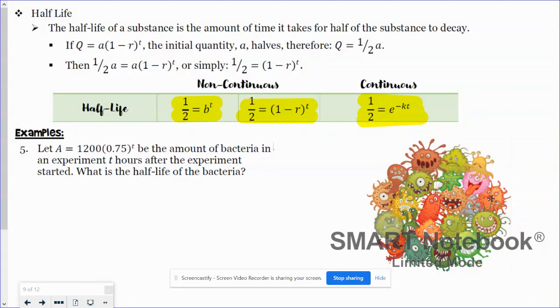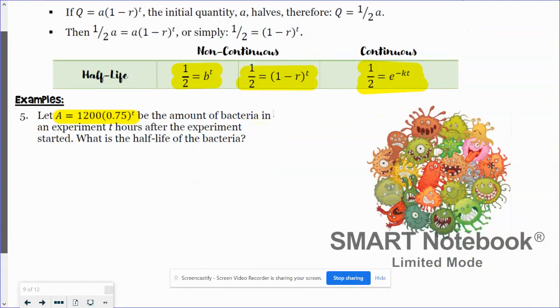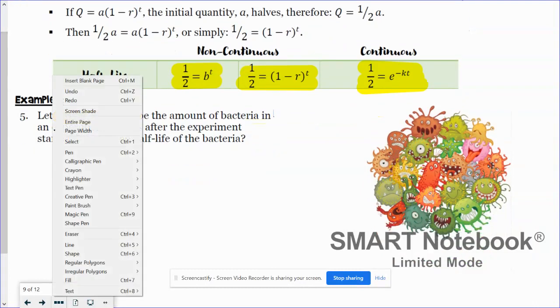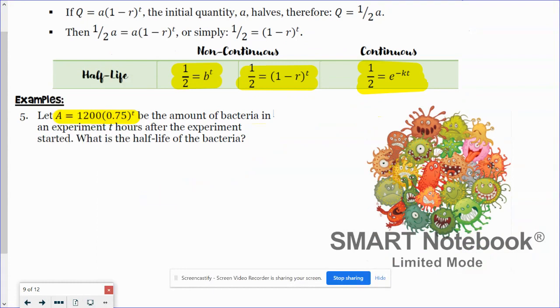So let's take a look at a few examples. Number five says let a equal 1200 times 0.75 to the t power. Be the amount of bacteria in an experiment t hours after the experiment started. What is the half-life of the bacteria? So in this problem here, the fact that they gave me the function, I want to use this formula here because basically I know what b is.